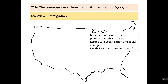When we look at the map in terms of the northeast, it's where the most economic and political power are concentrated — think Washington DC, New York, large cities. It's experienced in this period the most urbanisation and the most social change, and is therefore seen as the most European. So when we talk about the consequences of immigration and urbanisation, the majority of it occurs in the northeast.